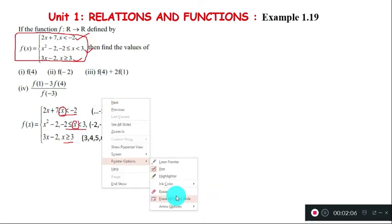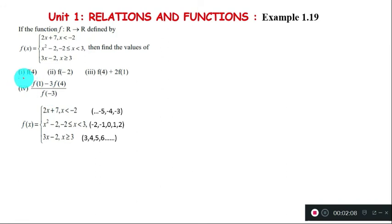For part (i), finding f(4): The value 4 falls in the interval x greater than or equal to 3, so we use the function 3x-2. Therefore f(4) equals 3 times 4 minus 2, which is 12 minus 2, giving us the answer 10.